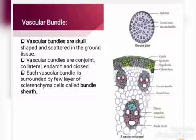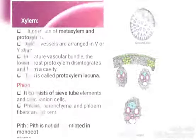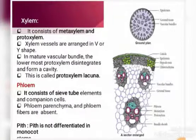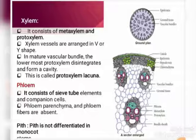The hypodermis is made up of sclerenchyma cells. The xylem arrangement shows an X and Y shape, where you can see the protoxylem lacuna. Phloem consists of sieve tubes and companion cells. In monocot stem, the pith is not differentiated.